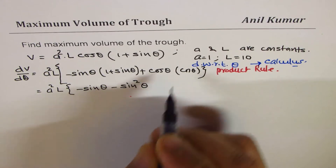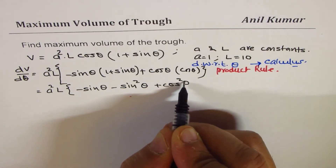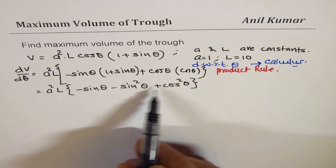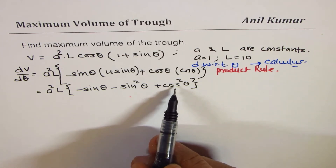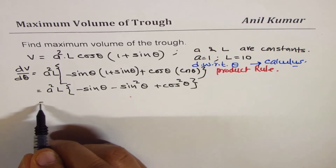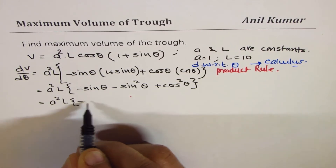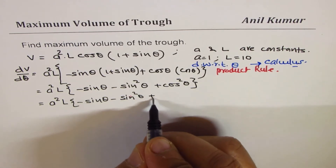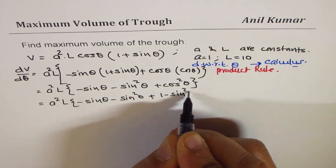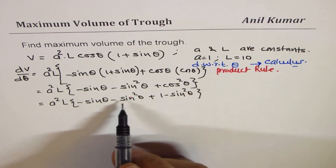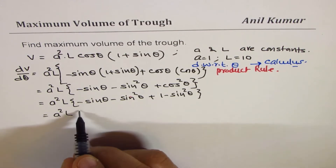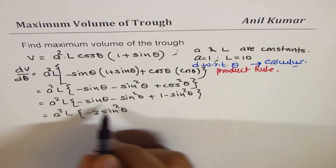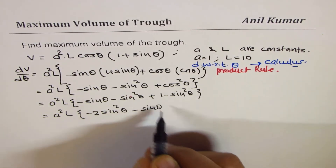Since we have cos squared theta and sin squared theta, it's helpful to write cos squared theta as (1 minus sin squared theta). This gives: a squared L times [minus sin theta minus sin squared theta plus 1 minus sin squared theta], which simplifies to a squared L times [minus 2 sin squared theta minus sin theta plus 1].